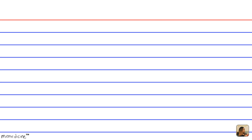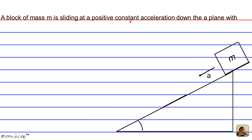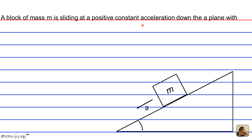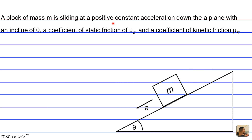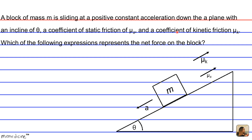A block of mass m is sliding at a positive constant acceleration down the plane with an incline of theta, a coefficient of static friction mu sub s, and a coefficient of kinetic friction mu sub k. Which of the following expressions represents the net force on the block?